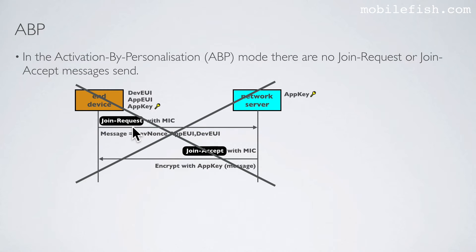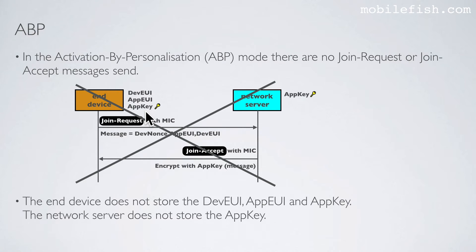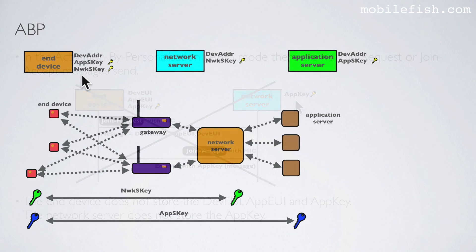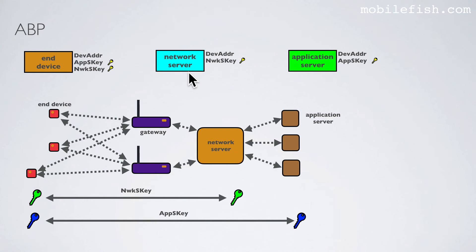In the activation by personalization mode, there are no join requests or join accept messages sent. The ANT device does not store the DevEUI, AppEUI, and AppKey, and the network server does not store the AppKey. Instead, the ANT device is preloaded with the device address, application session key, and network session key. The network server is preloaded with the device address and application session key. When an ANT device is trying to communicate with the network server, it will send the message directly, and these messages are encrypted and signed.